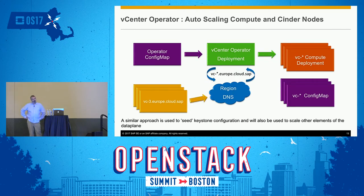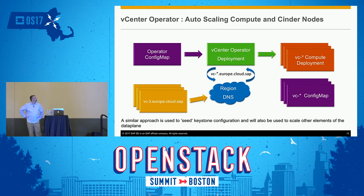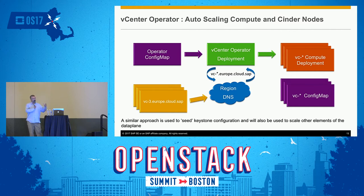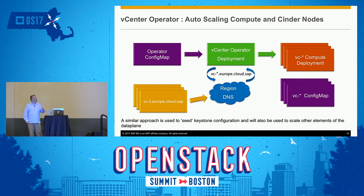We have what we call a vCenter operator — it doesn't follow the CoreOS operator pattern exactly, but provides operator-type behavior. We deploy it into the cluster and it polls our DNS service. When our infrastructure team builds a new vCenter, the last thing they do is create the DNS entry for the API endpoint. Once that happens, the operator detects something new to configure, retrieves pre-configured settings like username and master password, generates the necessary compute node configuration, and creates from a template the necessary compute pods and ConfigMaps. A new vCenter is immediately recognized, configured, and up and running.